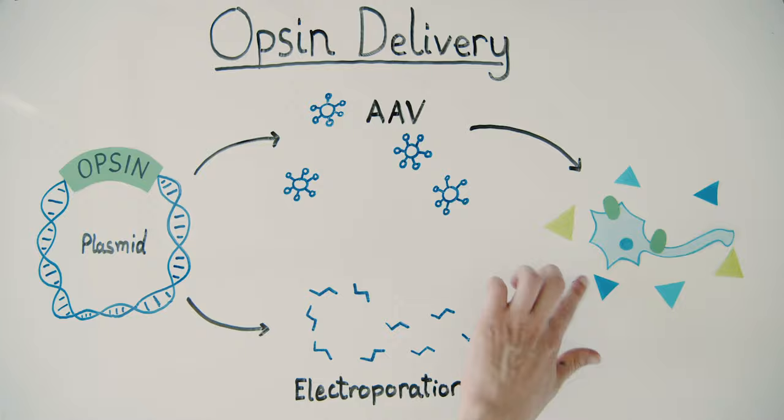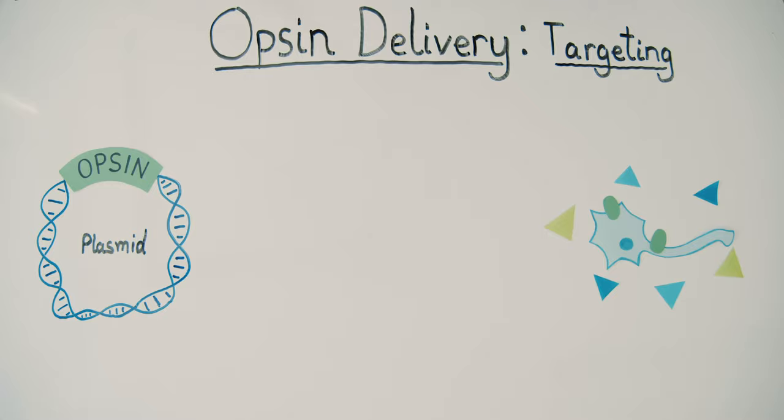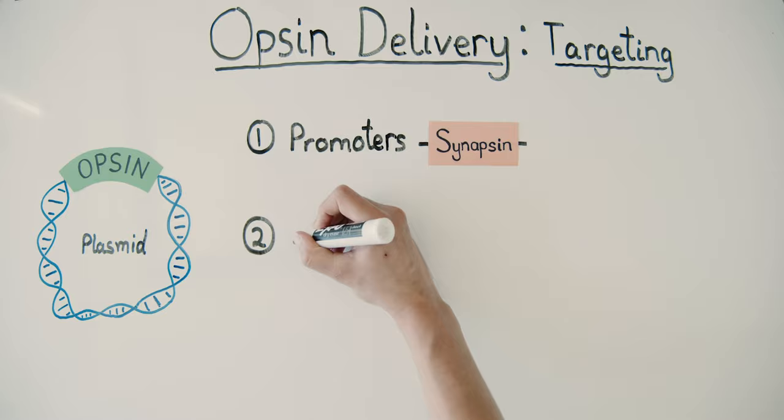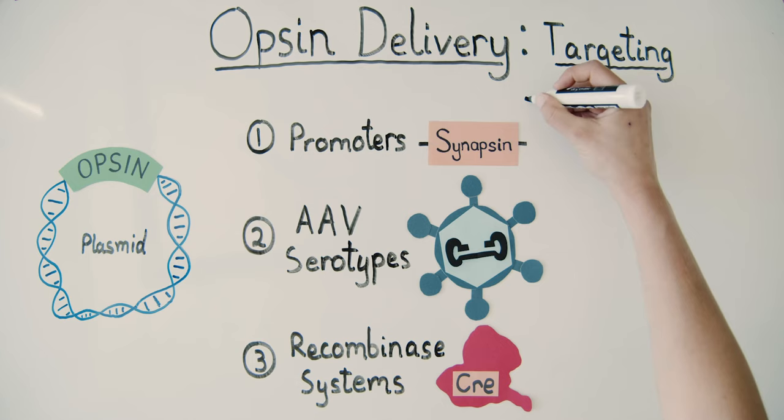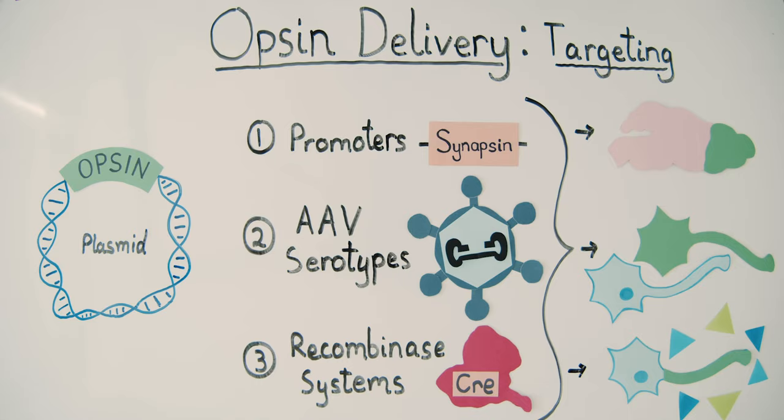A big part of successfully using optogenetic tools is making sure that opsins are only expressed in target cells. Scientists can target expression using tissue-specific promoters, AAV serotypes, and the ever-growing variety of recombinase systems. These techniques make it possible to target brain regions, neuron types, or even neuron cell bodies or projections.